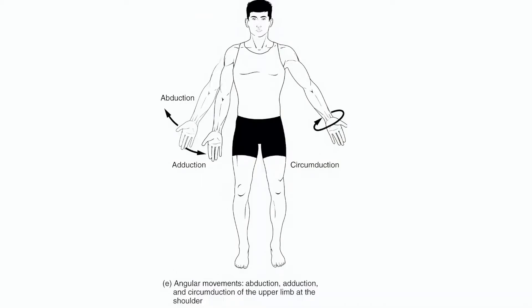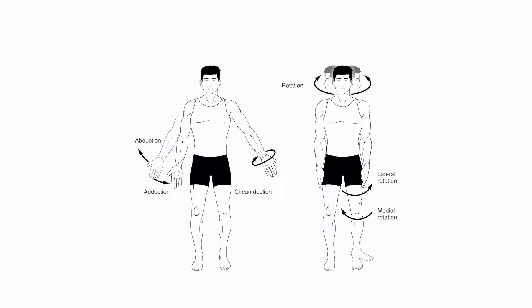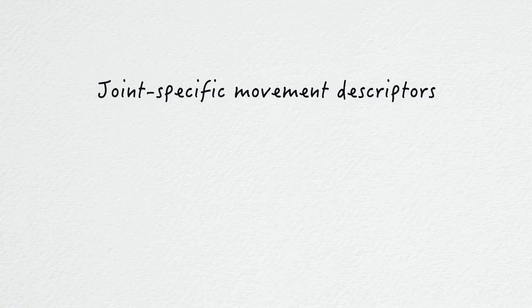Abduction and adduction are movements in the frontal plane and involve moving the body part away from or towards an imaginary centre line. Abduction is taking the body away from the central line and adduction is moving it towards that line. An example of this is shown at the hip. Rotation movements are in the transverse plane and include any twisting motion. Joints which permit rotation include the shoulder and hip. There are also joint-specific movement descriptors.